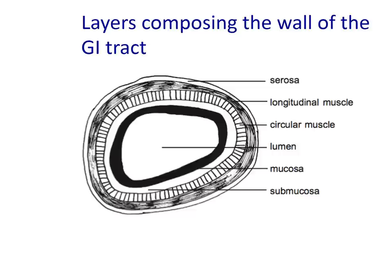Underneath the submucosa is the muscular layer, or muscularis. There are two layers of smooth involuntary muscle: the outer layer composed of longitudinal muscle fibers, and the inner layer of circular muscle fibers. The stomach has an additional inner layer of oblique muscle fibers. Activation of the muscle layer is coordinated by a network of intrinsic autonomic nerve fibers called the myenteric plexus — almost as if the GI tract has its own internal nervous system. Contraction and relaxation of these muscle layers propels material along the lumen and aids physical breakdown of food and mixing of digestive enzymes.